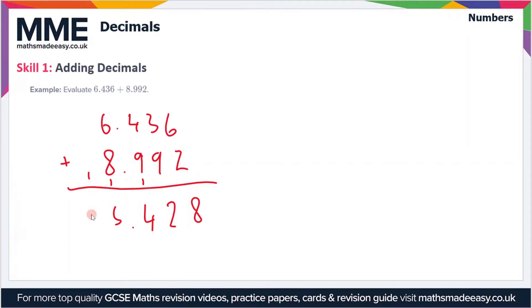So we're left with 15.428 as our final answer. 6.436 plus 8.992 equals 15.428. If you can do column addition, then adding decimals is essentially just the same thing.